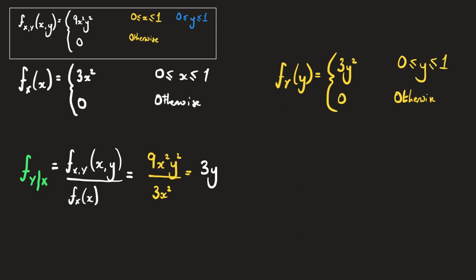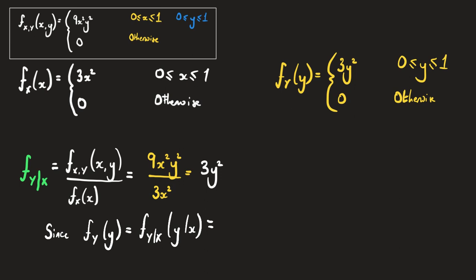Notice that the conditional PDF of y given x is exactly the same as the marginal PDF of y — both are 3y² for 0 ≤ y ≤ 1. This tells us that the two random variables are independent. Since the marginal PDF of y equals the conditional PDF of y given x, x and y are independent random variables.